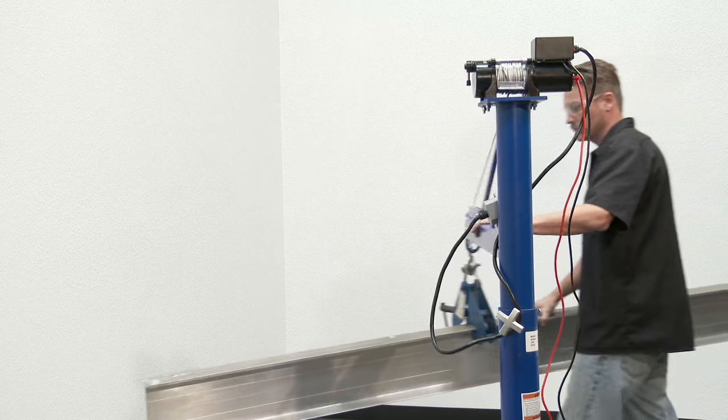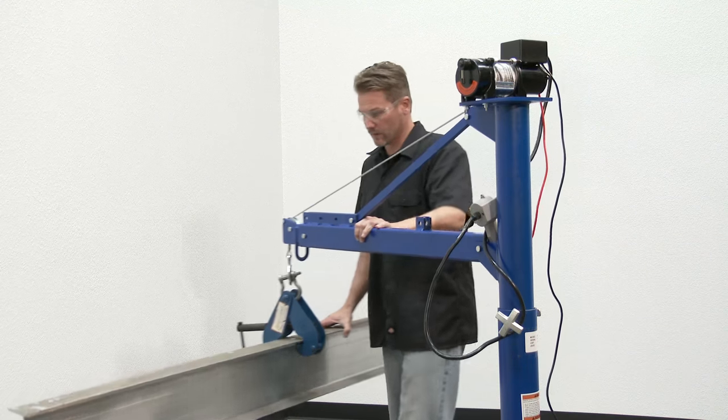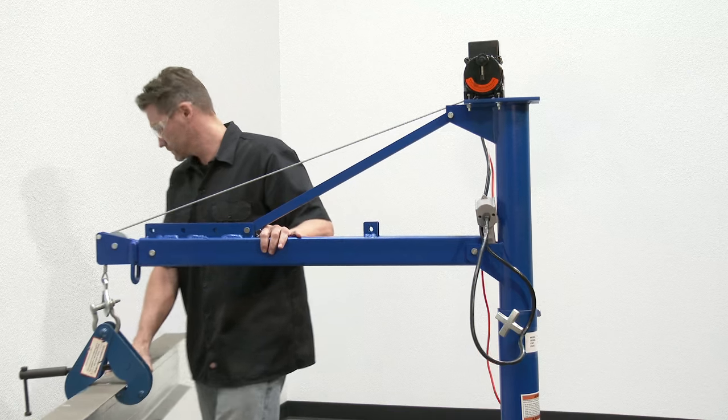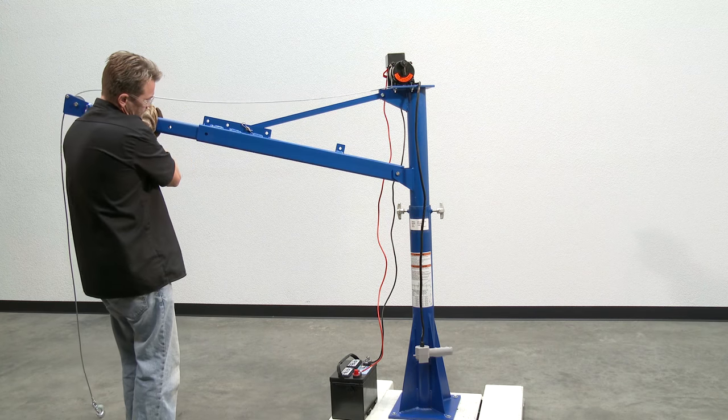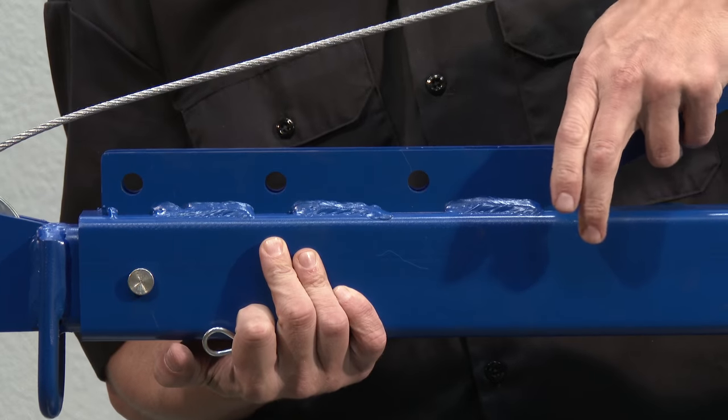Structural jib cranes feature rotation hand brakes that offer unlimited 360-degree manual positioning. The mast mounts permanently, and the boom adjusts in 12-inch increments and can be positioned at four elevations.